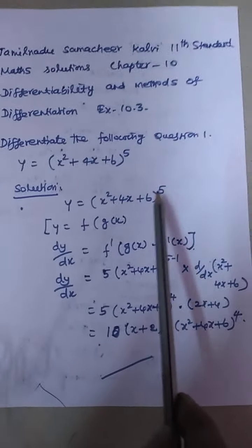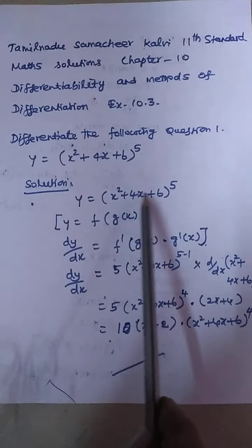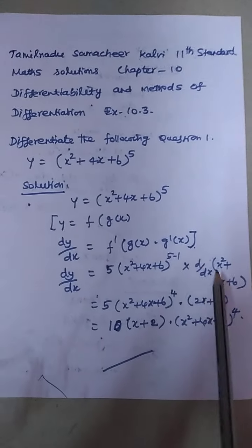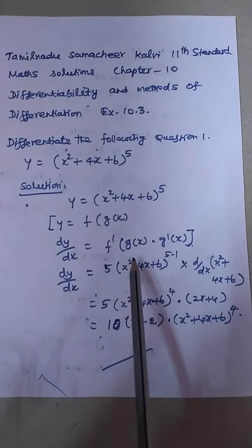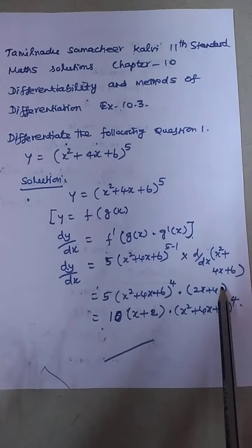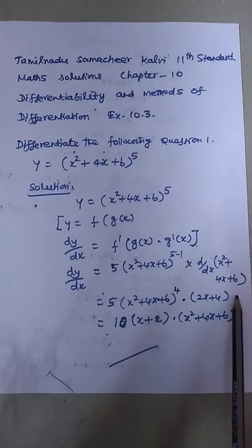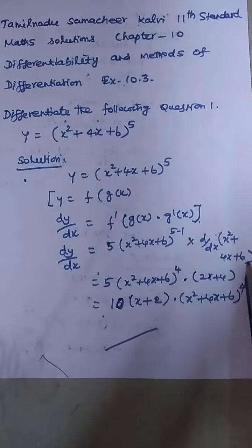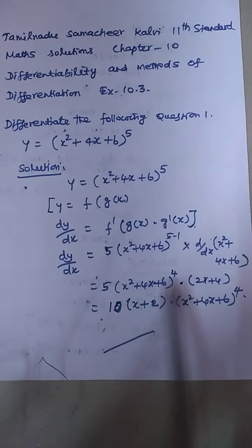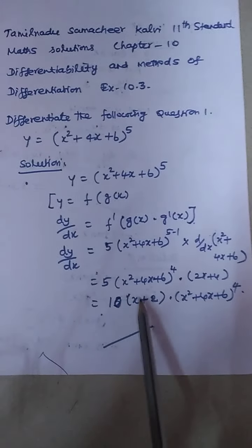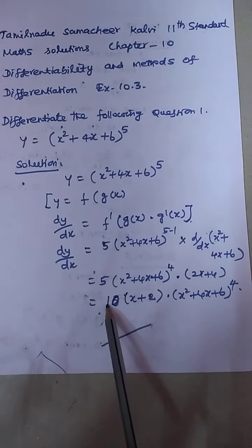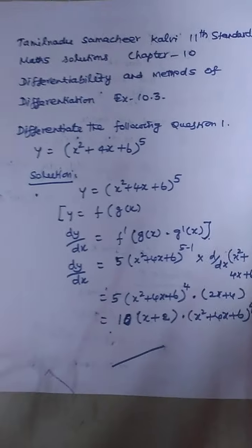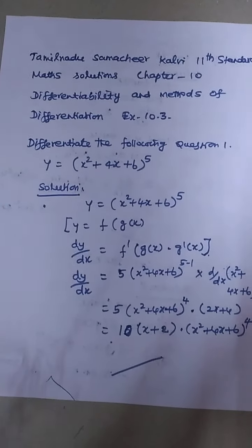So dy/dx = 5·(x² + 4x + 6)⁴ · d/dx(x² + 4x + 6). The derivative of x² is 2x, derivative of 4x is 4, and the constant 6 gives 0. So d/dx(x² + 4x + 6) = 2x + 4. Therefore dy/dx = 5·(2x + 4)·(x² + 4x + 6)⁴ = 10(x + 2)(x² + 4x + 6)⁴. That is the answer.